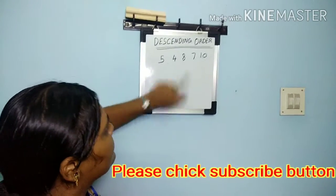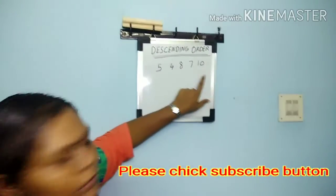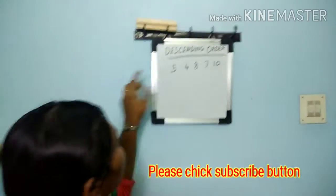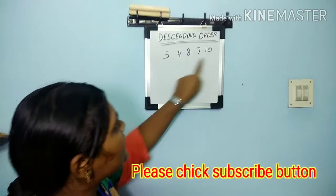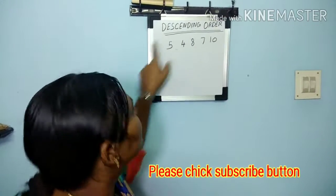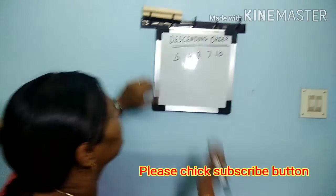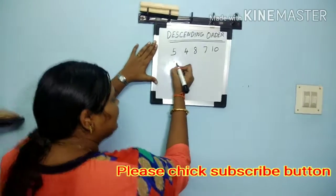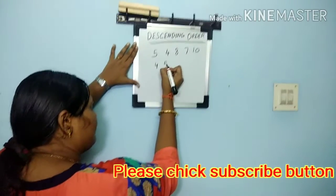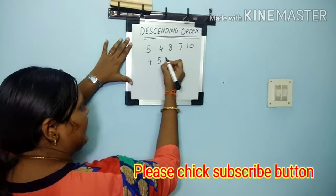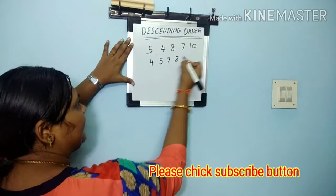Ask them: is there any 1? No. Is there any 2? No. Is there any 3? No. Is there any 4? Yes. So ask them to write it in ascending order: 4, 5, 7, 8, and 10.